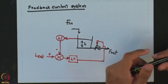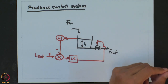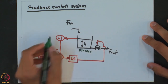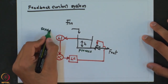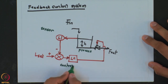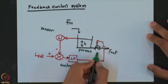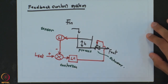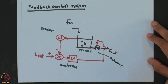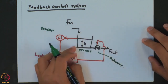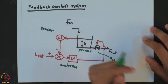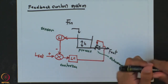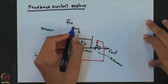The level controller acts on this error and generates an electrical signal corresponding to how much the valve should be opened. That signal goes to the valve, which takes action — opening or closing — and then F-out changes. When F-out changes, it affects the height, and this whole process repeats. So in a feedback control system, in addition to the process itself, you have a sensor, a controller, and a valve, which is known as the actuator.